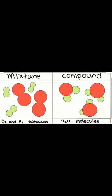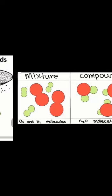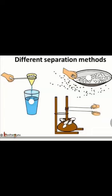From this we understand that when there is physical combination, it is a mixture. When there is chemical combination, it is a compound. Now we will study the different techniques that are used to separate mixtures.